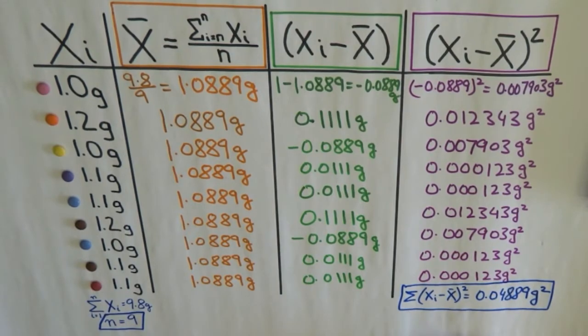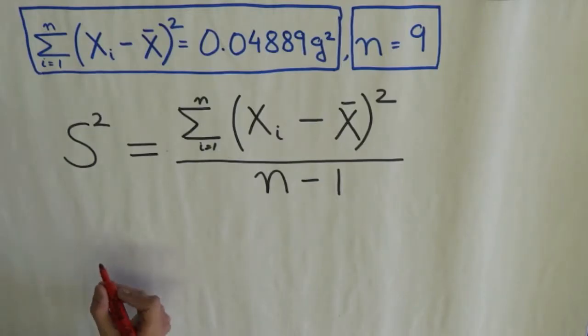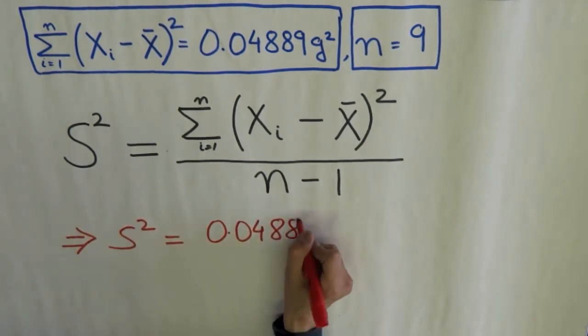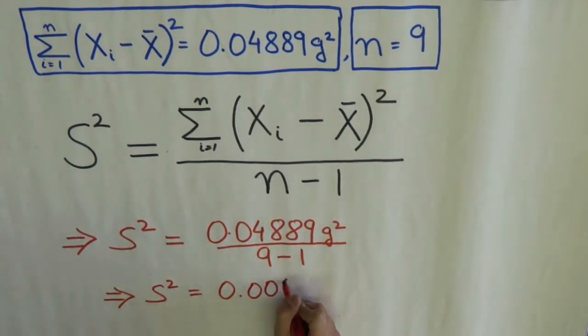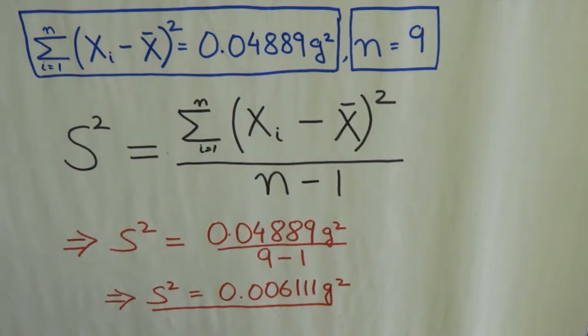And this... that we need to find the sample variance. So, this gives me... And my final answer comes out to be... which is the sample variance of the smarties weight.